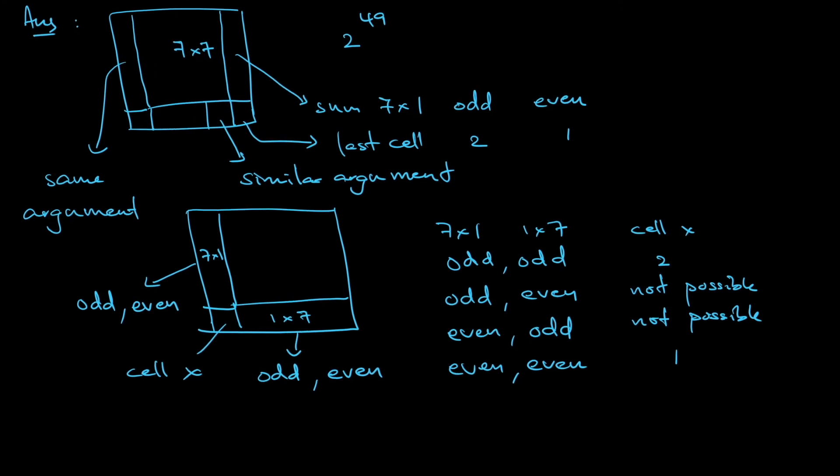So that means that hence the number of arrangements will be, remember, 2 to the power of 49, to put the 7 by 7 square, and then the 7 by 1 and the 1 by 7 have no choice but just to satisfy, and then half of this time possible to put cell x, half of the time I cannot have any value for x, so I still need to divide by 2. So the final answer is 2 to the power of 48.